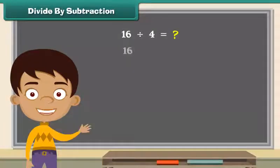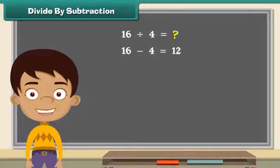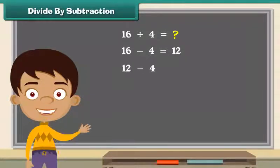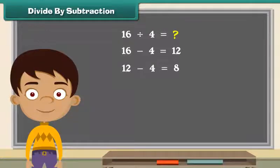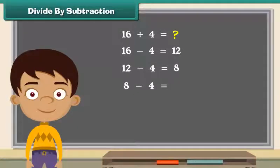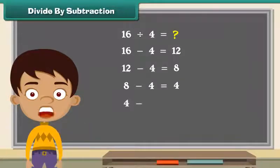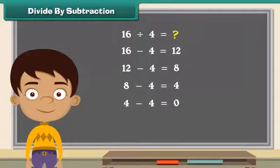Subtract 4 from 16. We get 12. Now subtract 4 from 12. We get 8. Subtracting 4 from 8, we get 4. Similarly, subtract 4 from 4. We get 0.